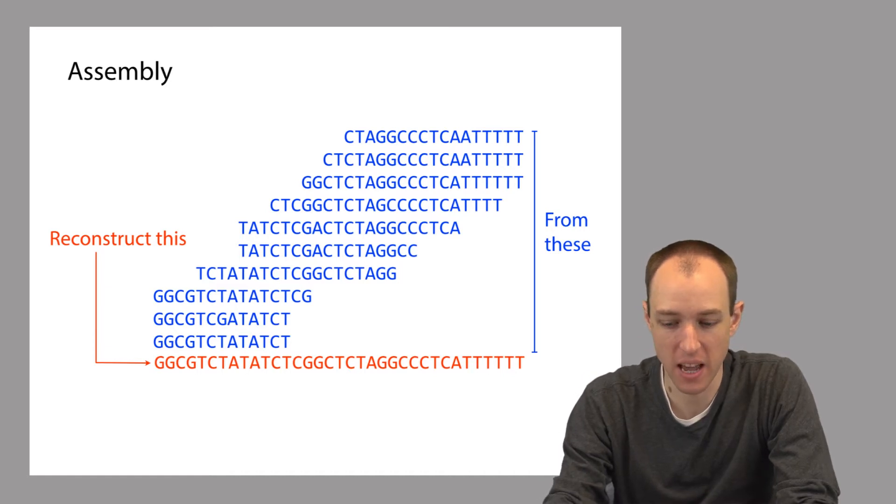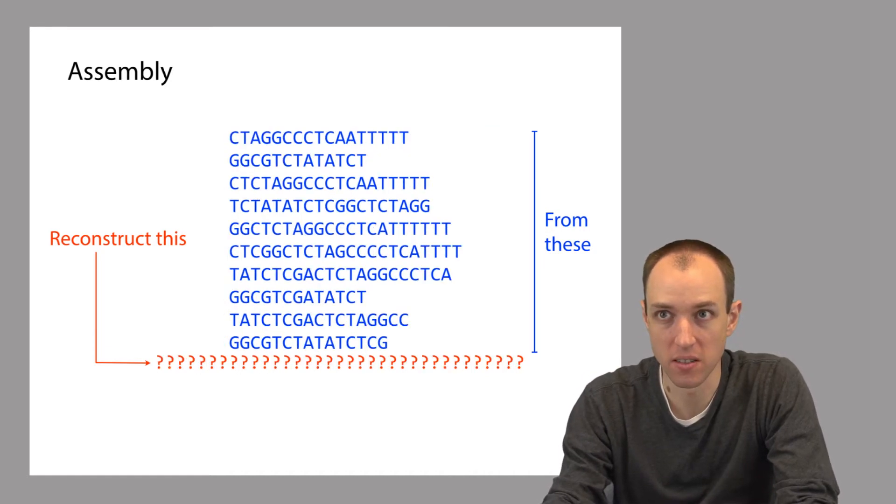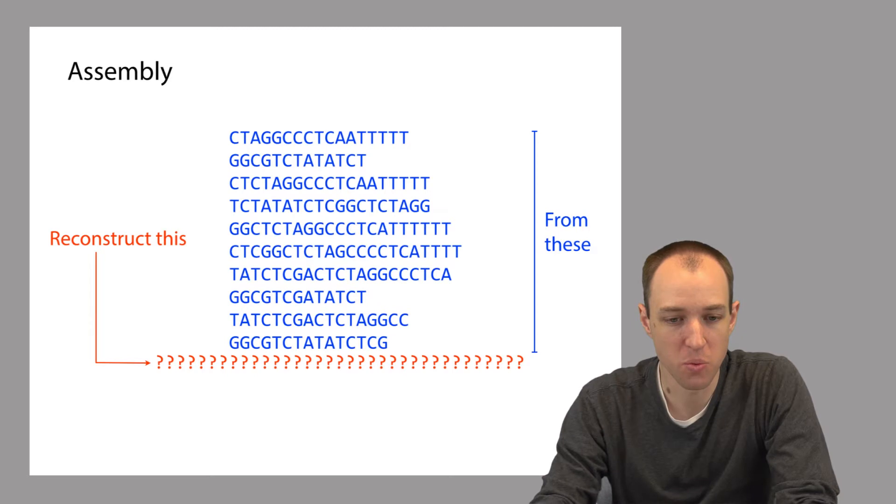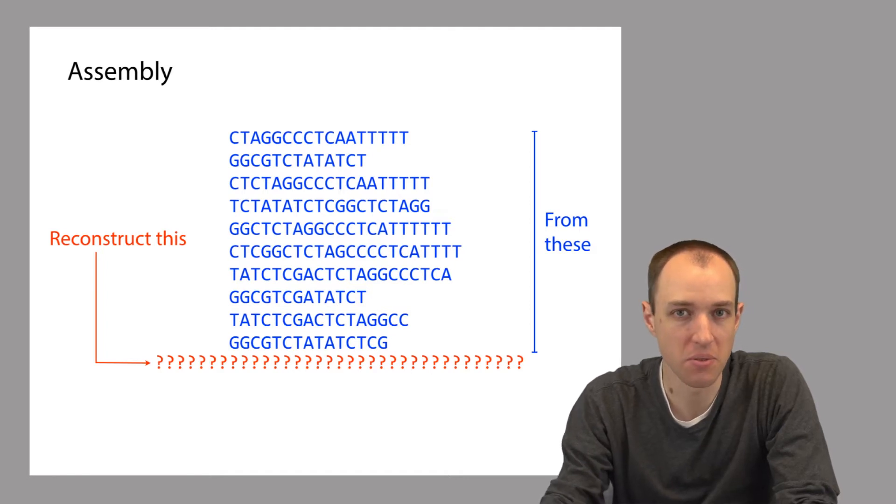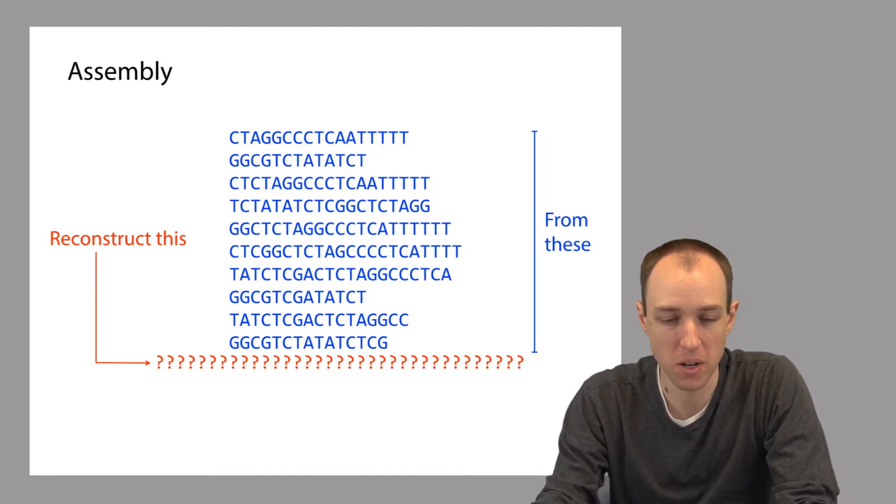What we actually get is a jumble of reads where we have no idea where they came from with respect to the genome, and of course we also don't know the sequence of the genome. So our goal is to reconstruct the genome sequence, these red question marks down here, given what we have, which are the blue sequencing reads.